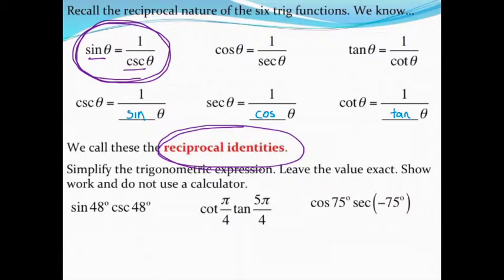For example, down here I have sine of 48 degrees times the cosecant of 48 degrees, and I want to find an exact value without using a calculator. What I notice is that both of these are the same angle. That's going to be key to doing these problems. We'll look at what to do if those are not the same angle in the next couple of examples.